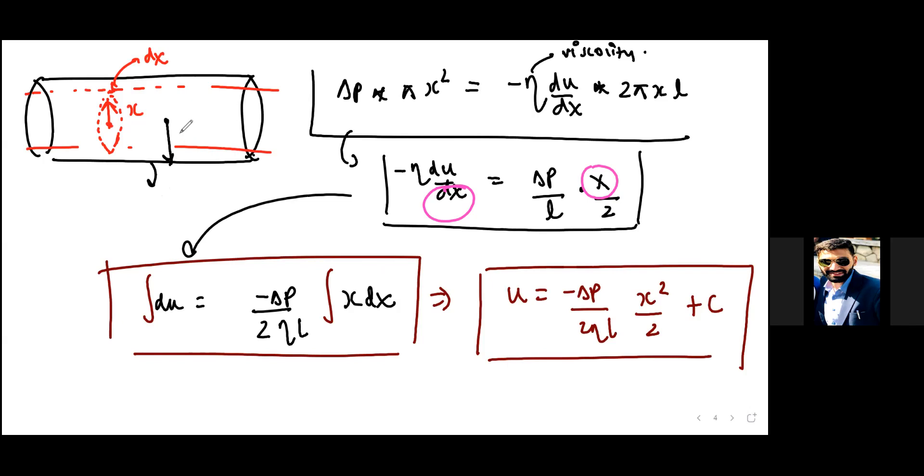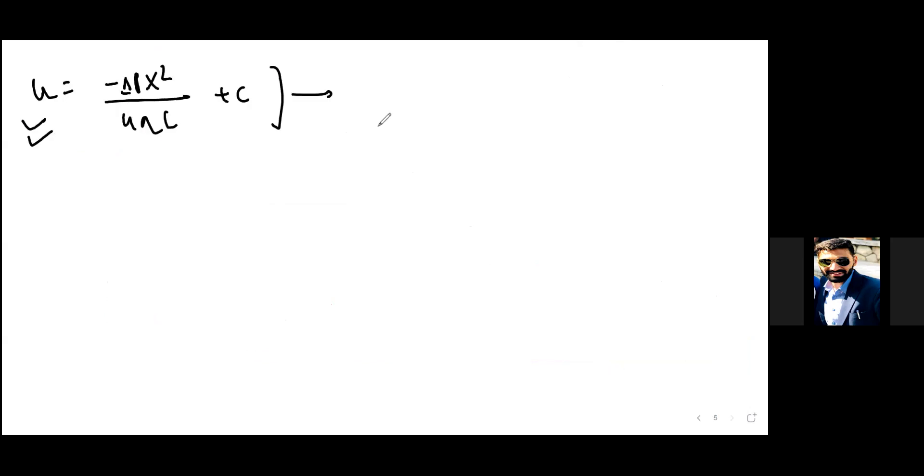At x equals r, your velocity is equal to zero, and that's what we need. If you put x equals r in this equation, our velocity is zero, so the left-hand side is zero and we get minus delta p r squared upon 4ηL plus c. So c becomes delta p r squared upon 4ηL.